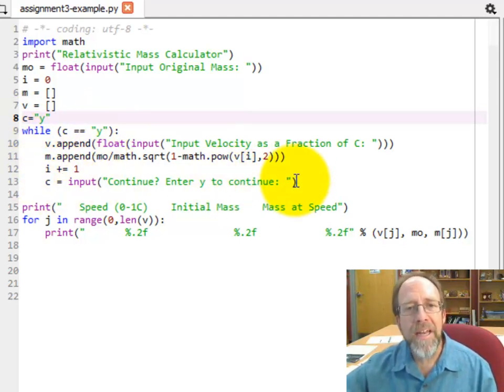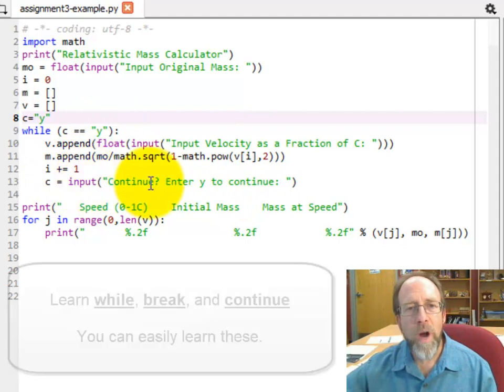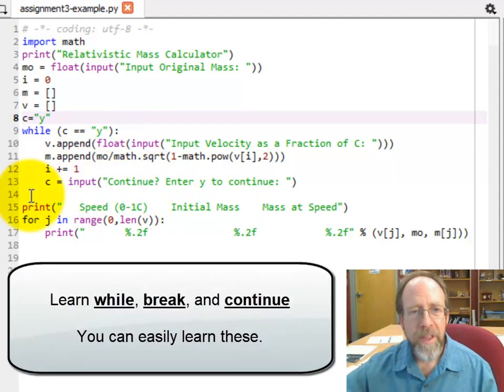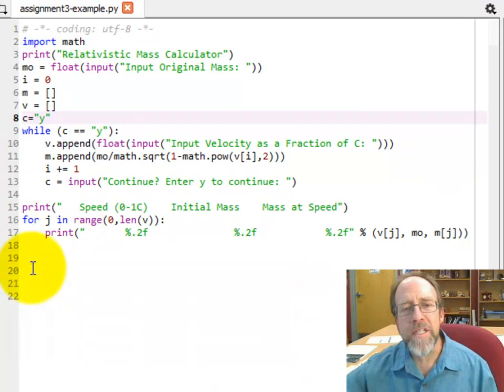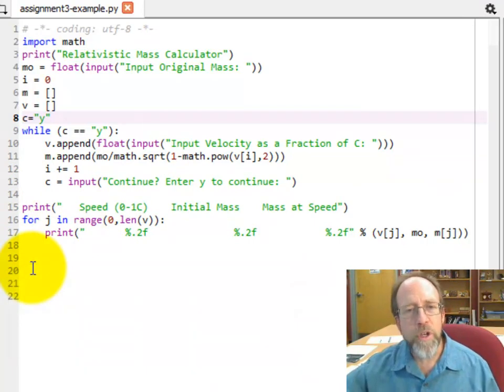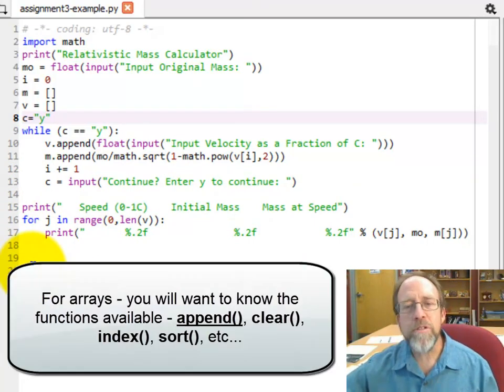The while simply does what's in here while that c is equal to y. When I set, when I hit n, c was no longer equal to y, so it went to the next line, where I printed out the header, and then I did the for loop. And the for loop does whatever it's supposed to do, however many times you tell it to do it.